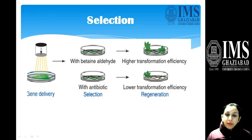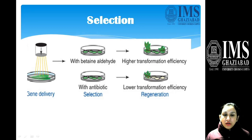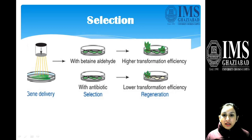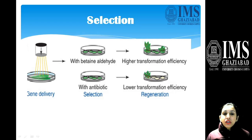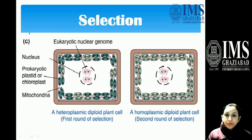The second step is selection. We can go for antibiotic selection or no antibiotic selection. With antibiotic selection we have low transformation efficiency, whereas without antibiotic — using betaine aldehyde — the transformation efficiency is quite higher.